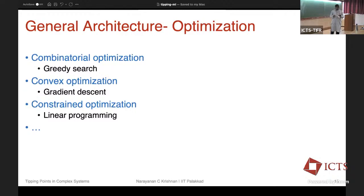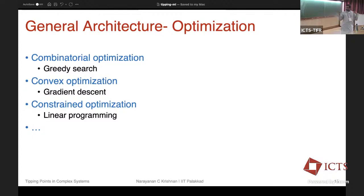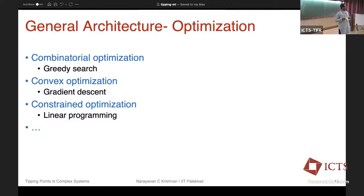Finally, you do optimization. You can do combinatorial optimization through greedy search, convex optimization through gradient descent and variants like stochastic gradient descent, mini-batch gradient descent, Adam, and so on. Or you can do constrained optimization through linear programming, quadratic programming, quadratically constrained linear programming, or integer programming. This is how one can abstract or summarize a machine learning algorithm.